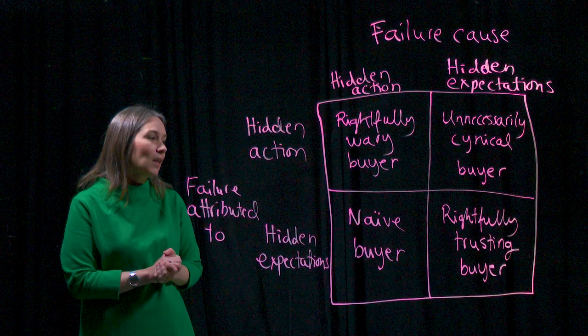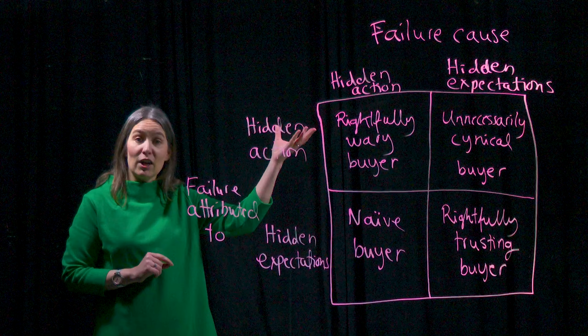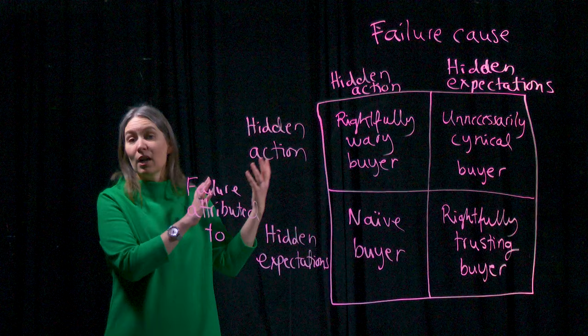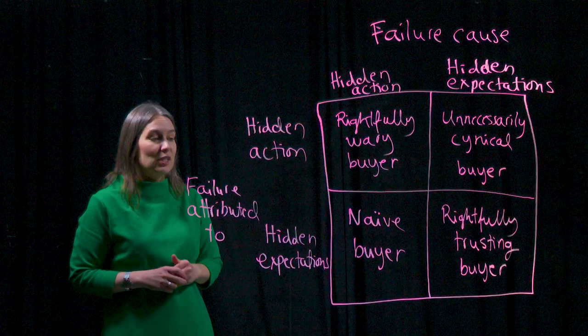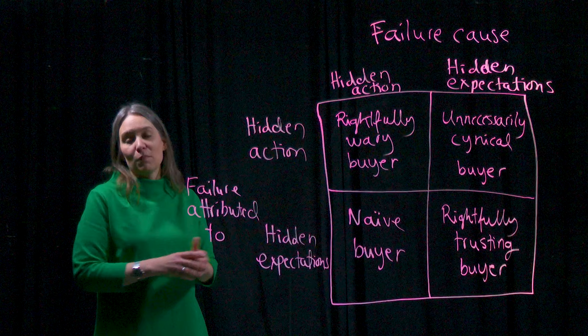In this case, there is a match between the failure cause and how it is attributed. The second scenario we call the rightfully trusting buyer, where the failure has been caused by hidden expectations — how the buyer and supplier communicated and acted with each other. The buyer correctly attributes the failure to hidden expectations in the relationship. This should lead to increased communication and coordination between buyer and supplier, improving the relationship and reducing hidden expectations and performance issues in the future.